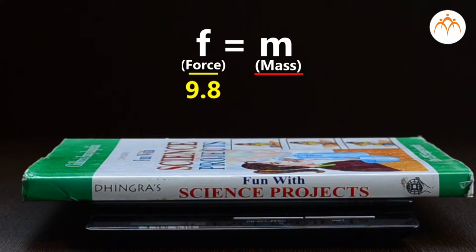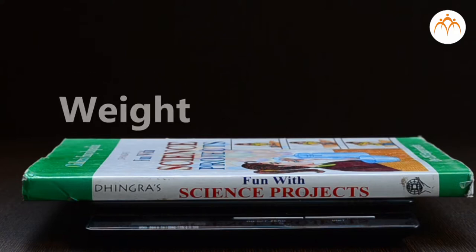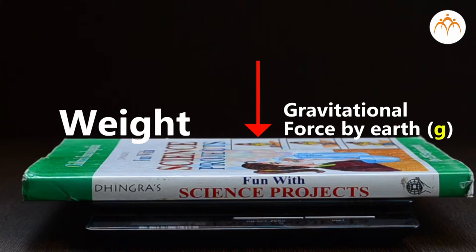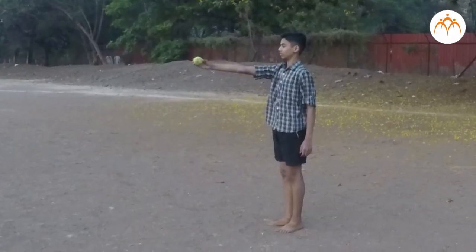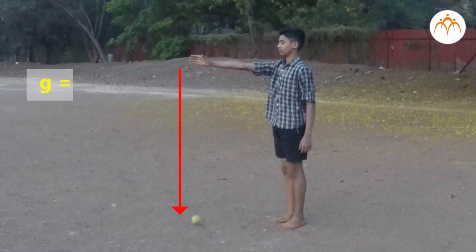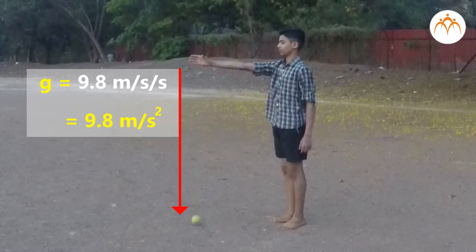Weight is related to mass, and many of us get confused between the two terms. In fact, they are conceptually very different. Weight of an object is the gravitational force exerted on it by Earth. In free fall, an object accelerates downwards at g, which equals 9.8 m/s².